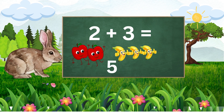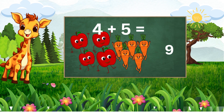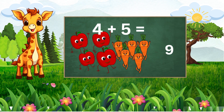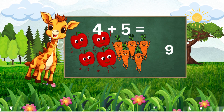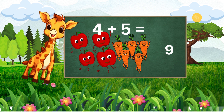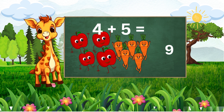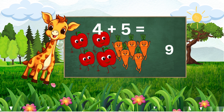Let's continue with this. If we have four apples and five carrots, how many fruits do we have in total? I know — we have nine fruits. Fantastic, giraffe. Four apples and five carrots equals nine fruits. You're all doing great.